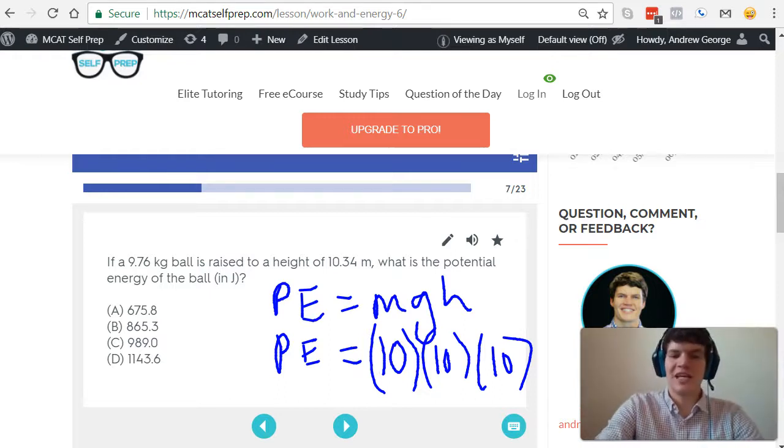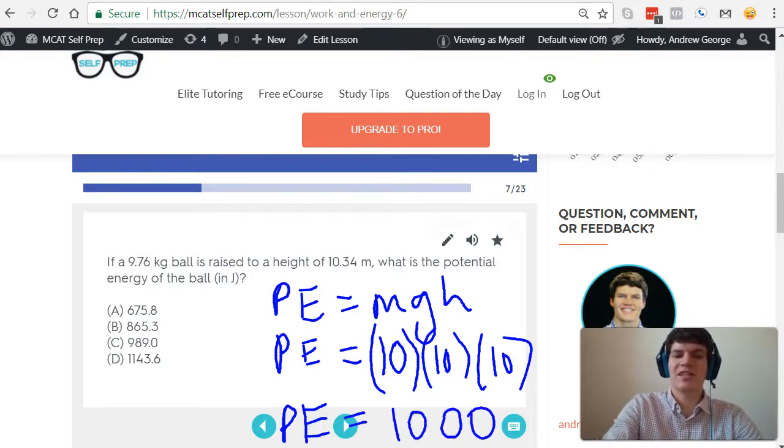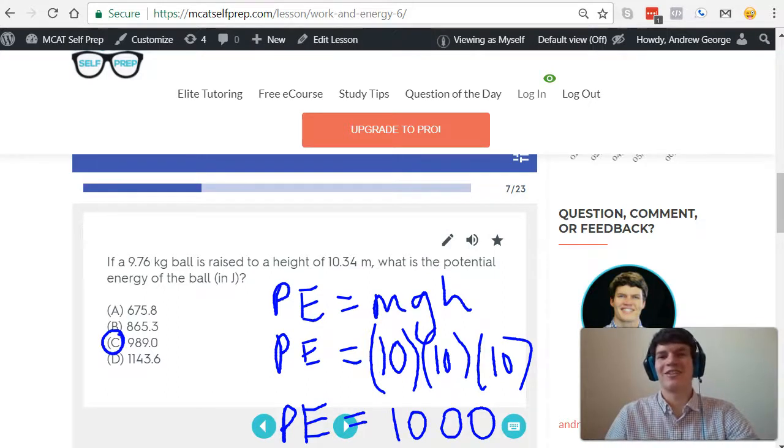So now we just do 10 times 10 times 10, and we get potential energy equal to 1,000. Therefore my answer is closest to answer choice C, 989 joules.